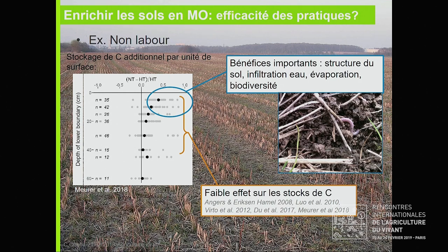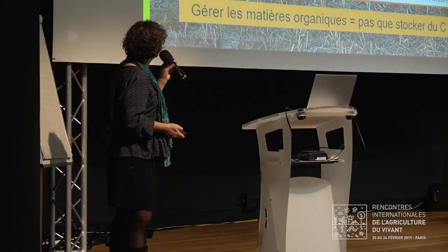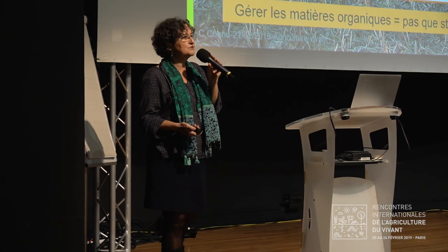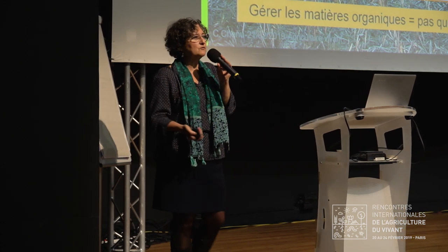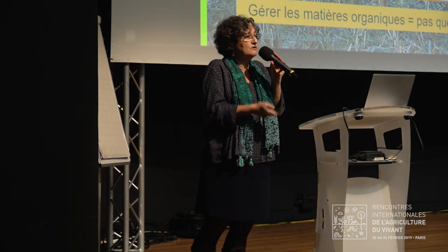Même si la réduction du travail du sol n'a pour effet que de concentrer les matières organiques en surface sans changer la quantité totale sur 30 à 60 cm d'épaisseur de sol, il peut y avoir des bénéfices importants en termes de structure du sol, d'infiltration, et de réduction de l'évaporation sous des climats secs. Gérer les matières organiques, c'est stocker du carbone dans le sol, mais ça n'est pas que stocker du carbone. L'initiative 4 pour 1000 a pour objectif d'améliorer la fertilité des sols, de préserver les matières organiques et d'en augmenter les stocks, pour la fertilité des sols et la sécurité alimentaire, pour l'adaptation au changement climatique, et pour augmenter le stockage de carbone pour l'atténuation du changement climatique. C'est donc plus large que du carbone.